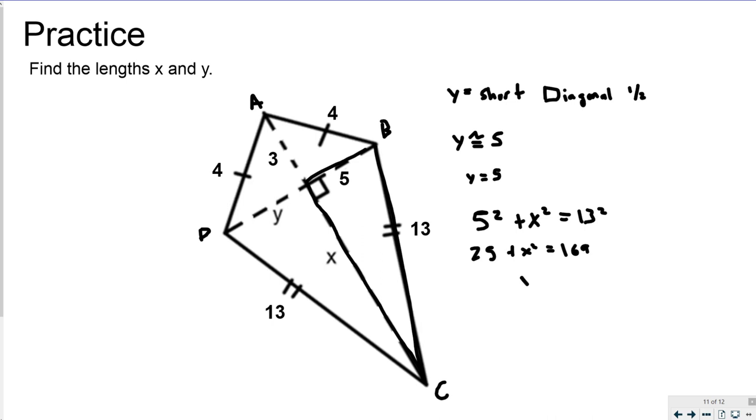Take 25 from both sides, I get X squared equals 144. Take the square root of both sides, and you get X equals 12. So I've got my X, I found the Y, and answered everything that goes in.